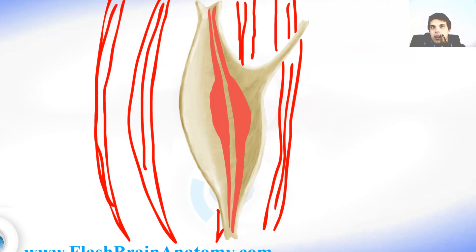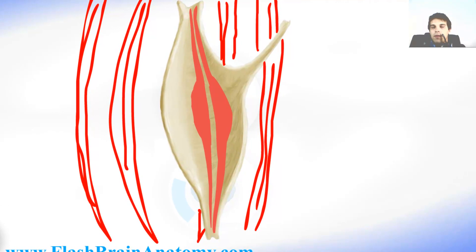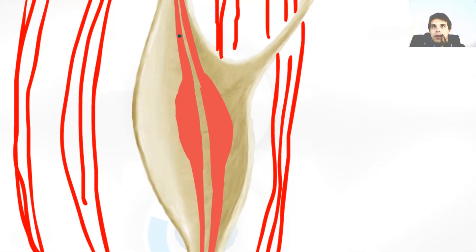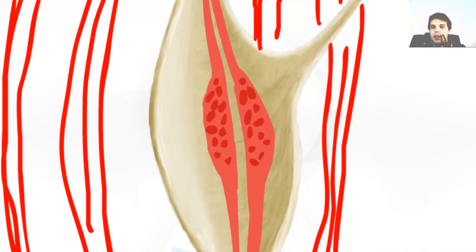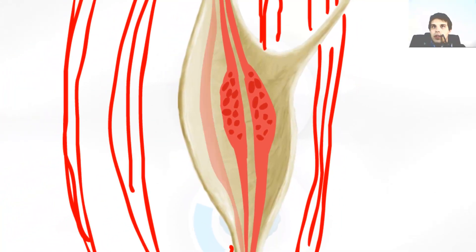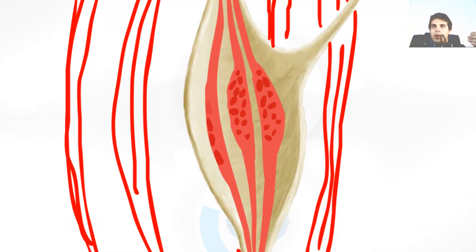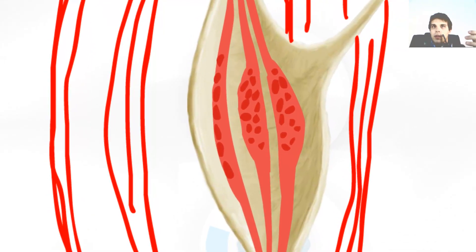Not all intrafusal muscle fibers are the same. There are two types. The first type is nuclear bag fibers — they look like a bag in the center of the fiber, and inside that bag there are nuclei of the muscle. The second type is nuclear chain fibers, called that because the arrangement of nuclei is similar to a chain.